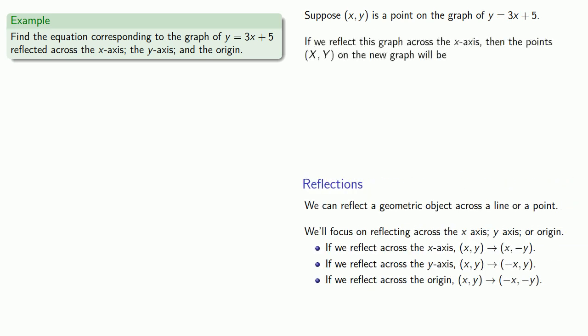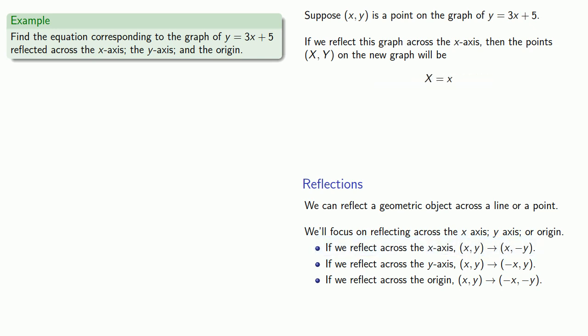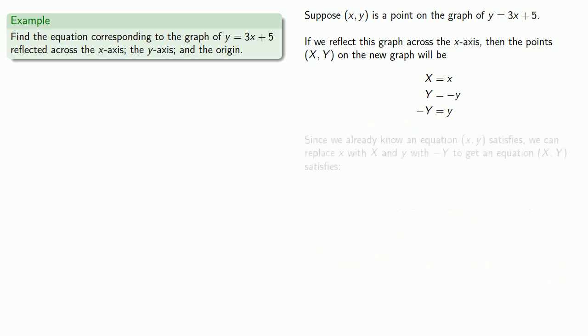If we reflect this graph across the x-axis, then the points (X, Y) on the new graph will be: capital X is the same as the original x-coordinate, and capital Y is the negative of the original y-coordinate. That also means that lowercase x equals capital X and lowercase y equals negative capital Y. Since we already know an equation lowercase x and y satisfies, we can replace lowercase x with capital X and lowercase y with negative capital Y, to get an equation that capital X and Y satisfy.